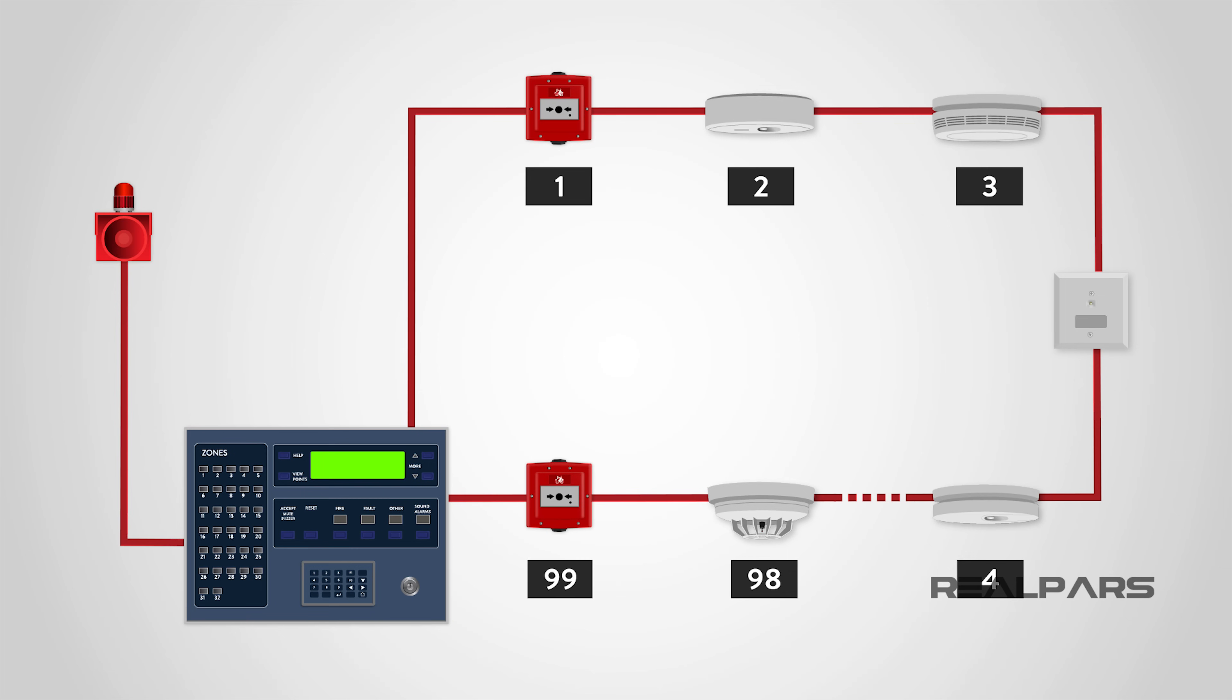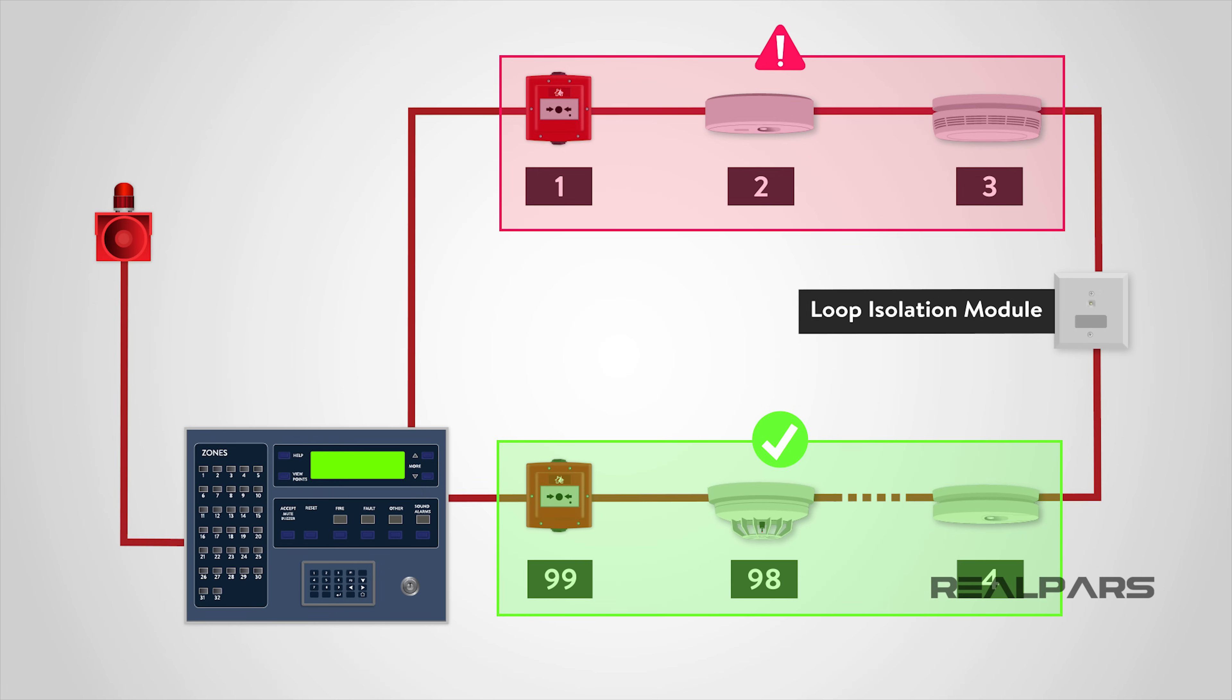It is common for the loop to be fitted with loop isolation modules, so that the loop is sectioned in order to ensure that a short circuit or single fault will only cause the loss of a small part of the system, allowing the rest of the system to function normally.